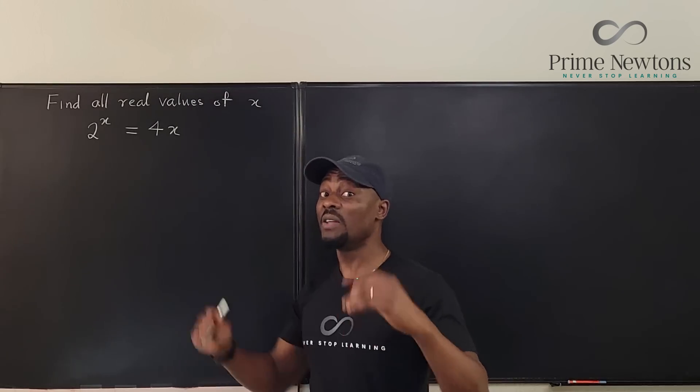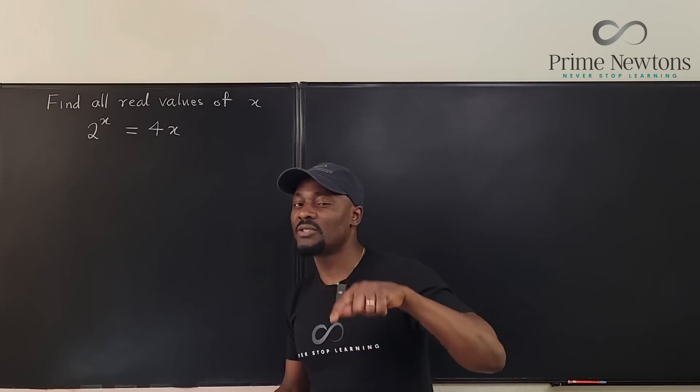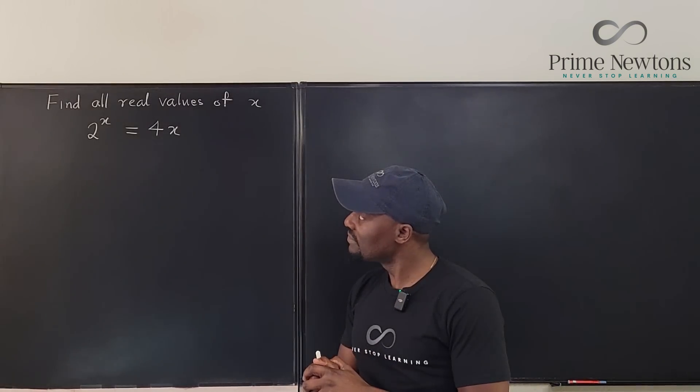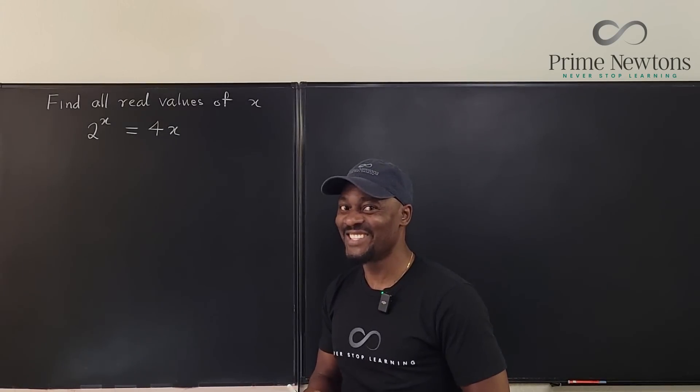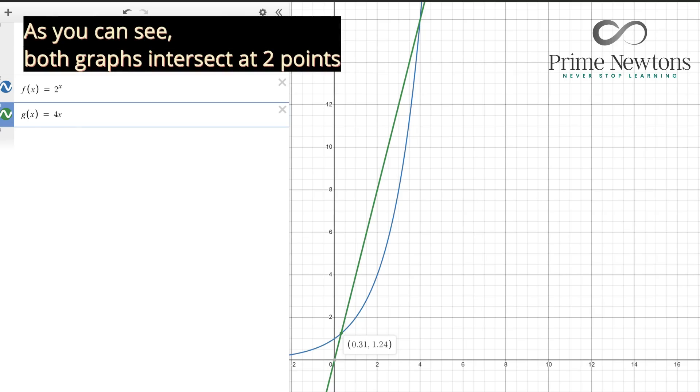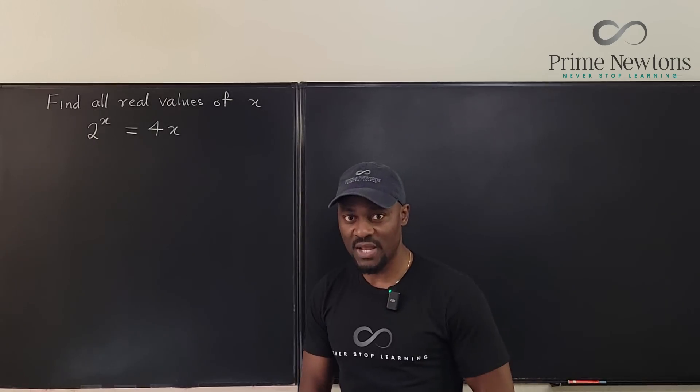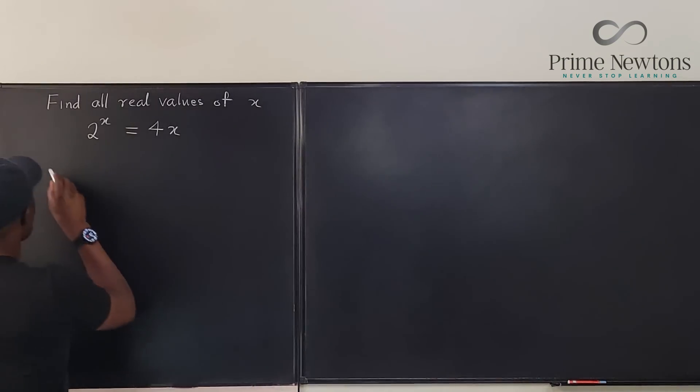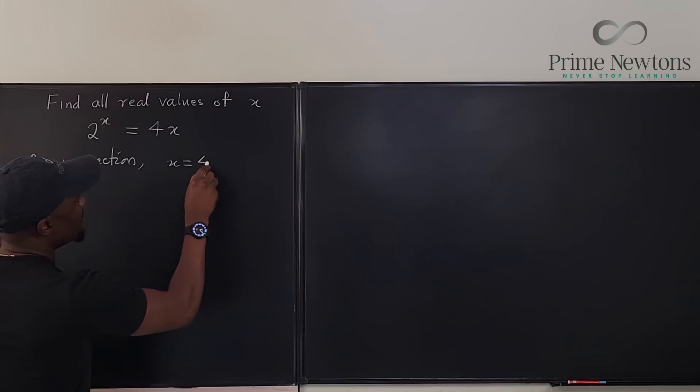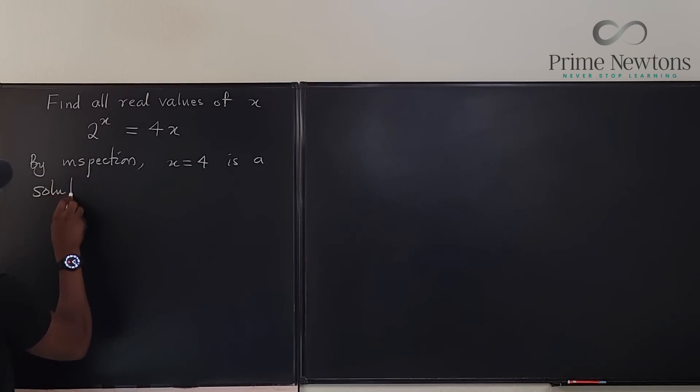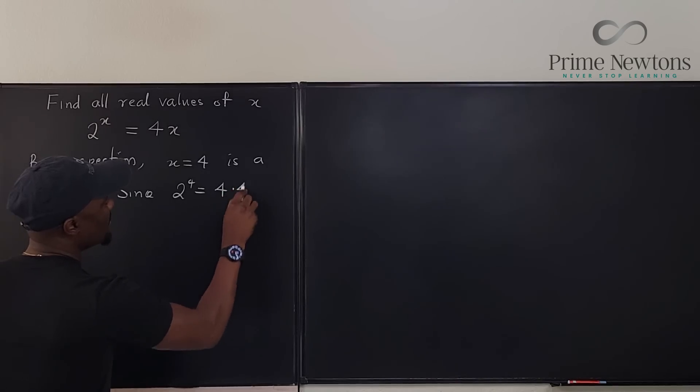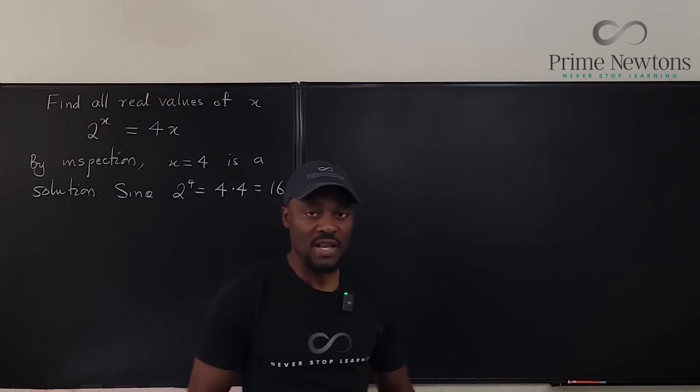So if you're looking for another solution, you want to go back down because it's possible that something happened before you got to 4. So what you want to do is algebra. There's nothing else you can do. Now, if you plot this in Desmos, this is what you're going to get. By inspection, x equals 4 is a solution since 2 to the 4 equals 4 times 4, which is equal to 16.